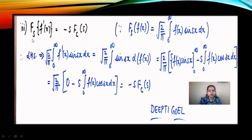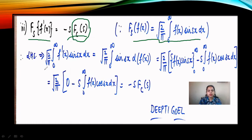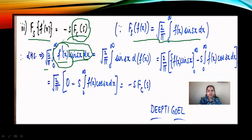Moving to the next property: when the Fourier Sine Transform is applied on the first order derivative of the function, Fs{f'(x)} equals minus s times the Fourier Cosine Transform. Applying the basic definition of the Fourier Sine Transform, we get root 2 by pi integral 0 to infinity of f'(x) sin(sx) dx. Similarly to the cosine transform derivation, we write f'(x) dx as d of f(x) and apply integration by parts, giving f(x) sin(sx) from 0 to infinity, and the derivative of sin(sx) is minus s cos(sx). So we have integral 0 to infinity f(x) cos(sx) dx, and clubbing root 2 by pi with this gives the definition of the Fourier Cosine Transform.